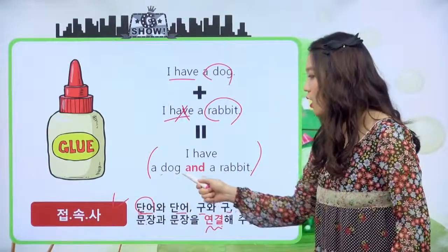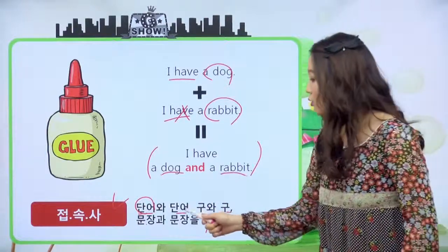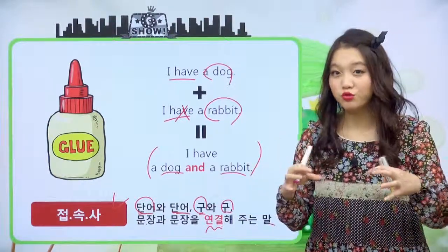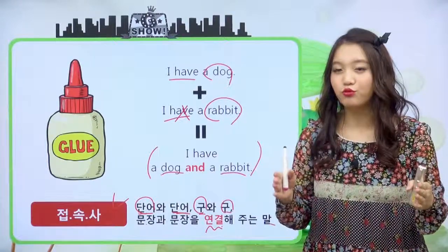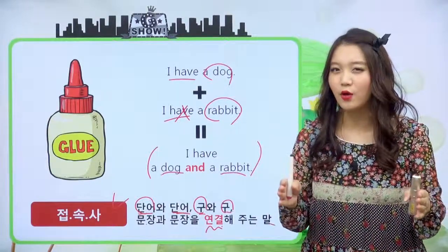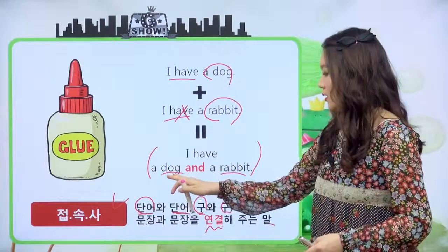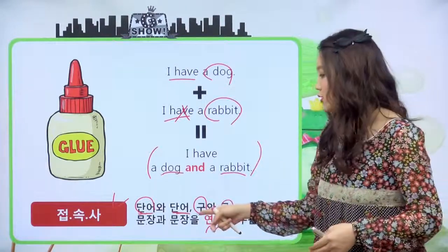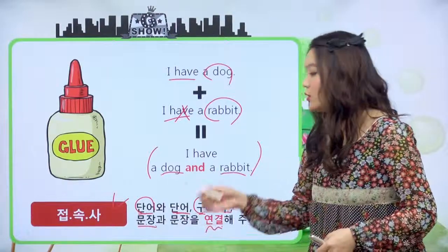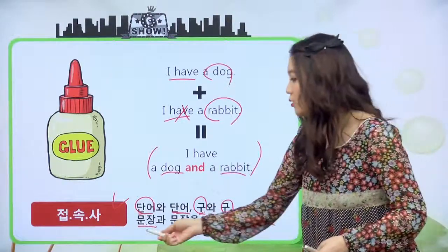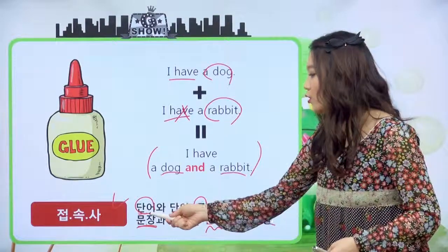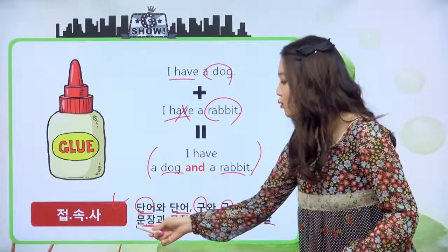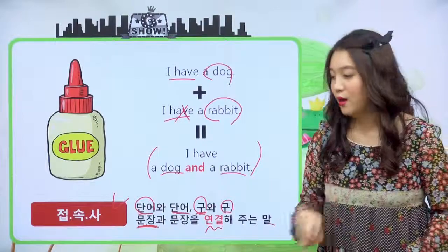우리 친구들 단어는 뭔지 알죠? 예를 들면 dog, rabbit, 이런 것들을 단어라고 하고, 구는 뭐냐면 두 개 이상의 단어의 묶음을 구라 그래요. 그 두 개 이상 단어의 묶음 안에 주어동사가 들어있지 않은 거예요. 예를 들면 a cute dog, a small rabbit 이렇게 되면 이런 것들을 구라고 하고, 문장은 주어동사가 존재하는 것을 문장이라고 합니다. 그래서 단어, 구, 문장을 연결하는 것이 접속사예요.